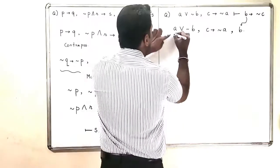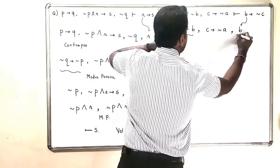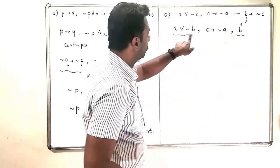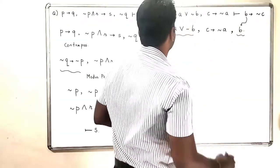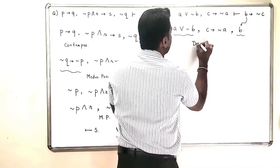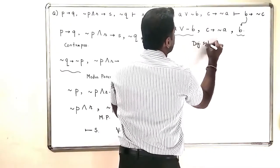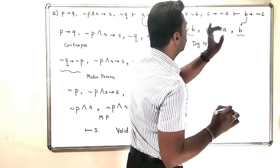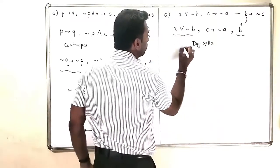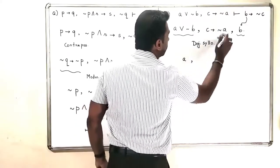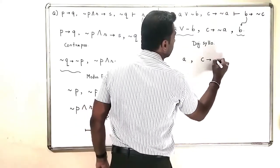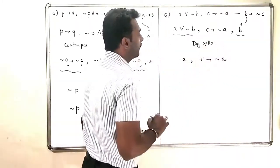So, if I look at the first and the last thing, I can obviously see that negation B will go off with B by disjunctive syllogism. So, I am going to apply disjunctive syllogism to omit this B from the picture. So, what will remain in the picture are A and the middle term, which is C implies negation A.